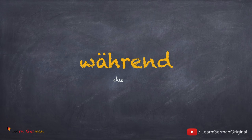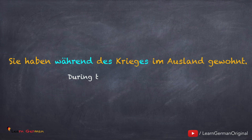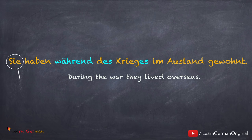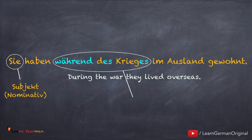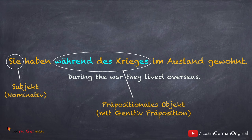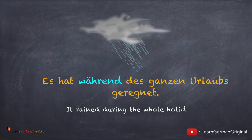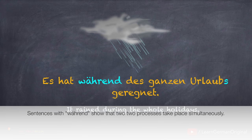Die nächste Präposition ist 'während'. Diese Präposition benutzt man auch als eine Konjunktion, aber wir lernen, wie man 'während' als eine Genitivpräposition benutzt. Hier ist der erste Satz: Sie haben während des Krieges im Ausland gewohnt. 'Sie' ist das Nominativsubjekt und 'während des Krieges' ist präpositionales Objekt mit Genitivpräposition. Weil 'während' eine Genitivpräposition ist, schreiben wir statt 'Der Krieg' → 'des Krieges'. Sätze mit 'während' zeigen, dass zwei Prozesse oder zwei Sachen nebeneinander stattfinden.